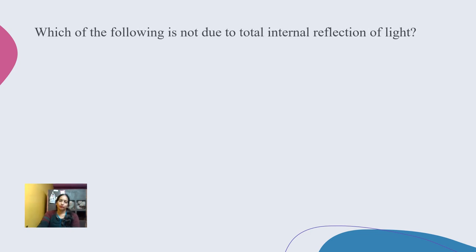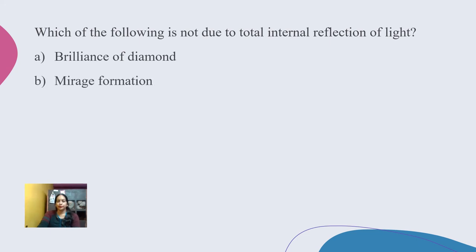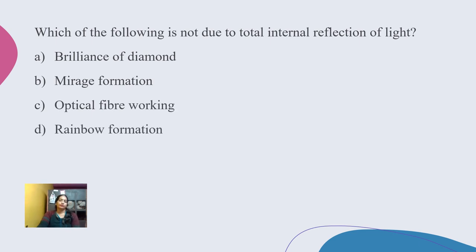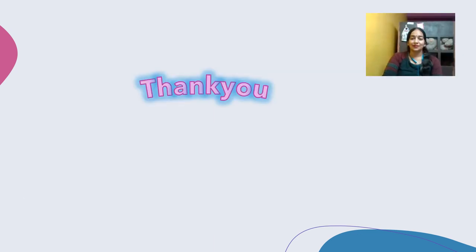Next question: Which of the following is NOT due to total internal reflection — brilliance of diamond, mirage formation, optical fiber working, or rainbow formation? The correct answer is rainbow formation. Rainbow is not caused by total internal reflection — unlike the other options which are examples of TIR.